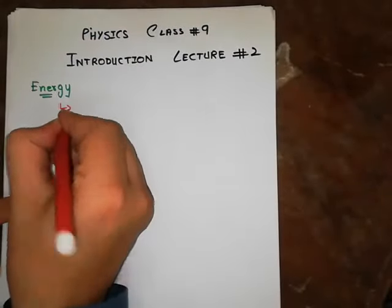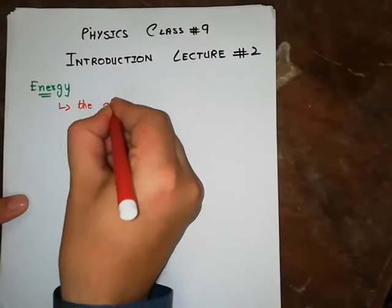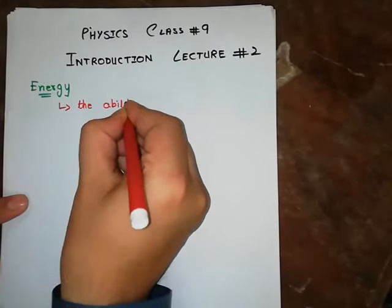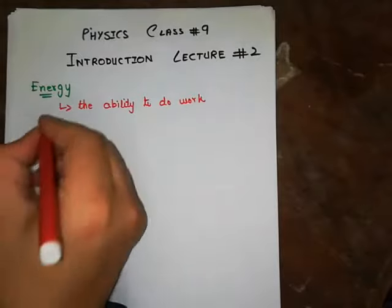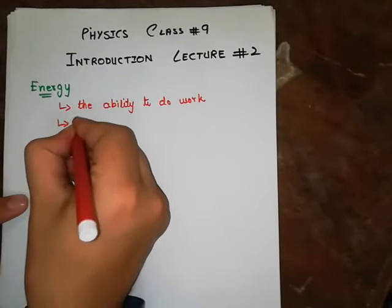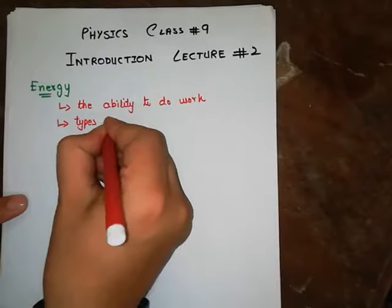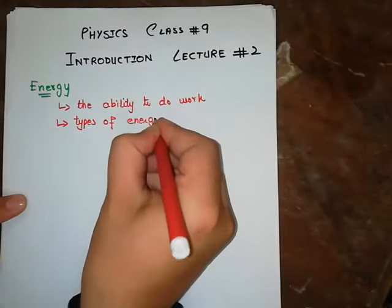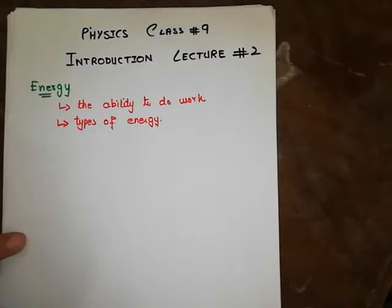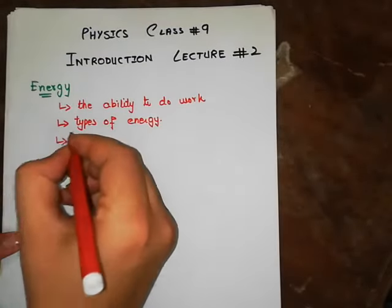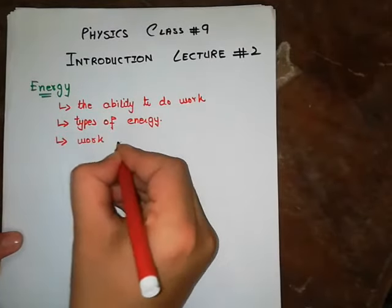Energy is generally defined as the ability to do work. In this domain we discussed different types of energy: kinetic energy, potential energy, chemical energy, heat energy, and thermal energy — there are many types of energy that we will discuss.